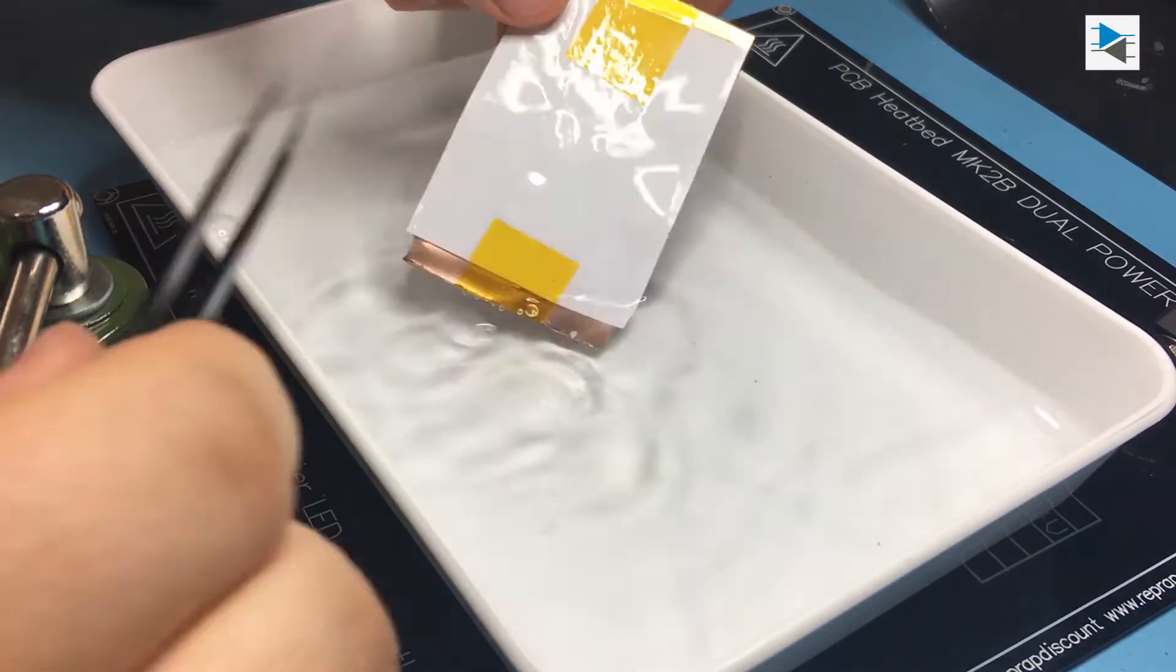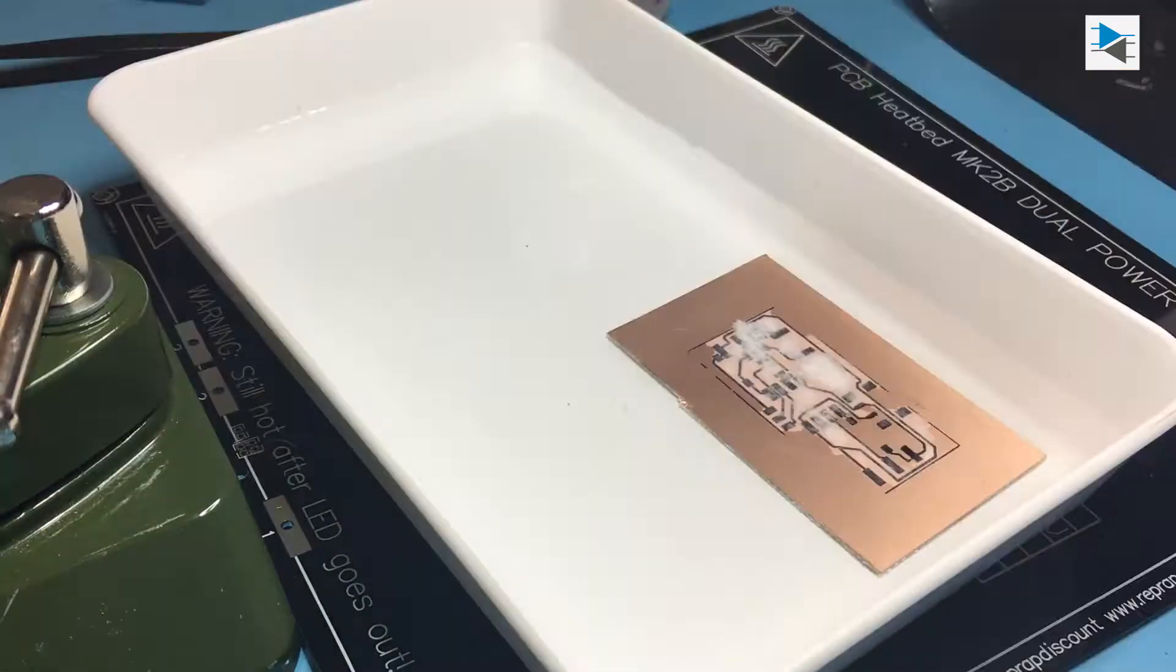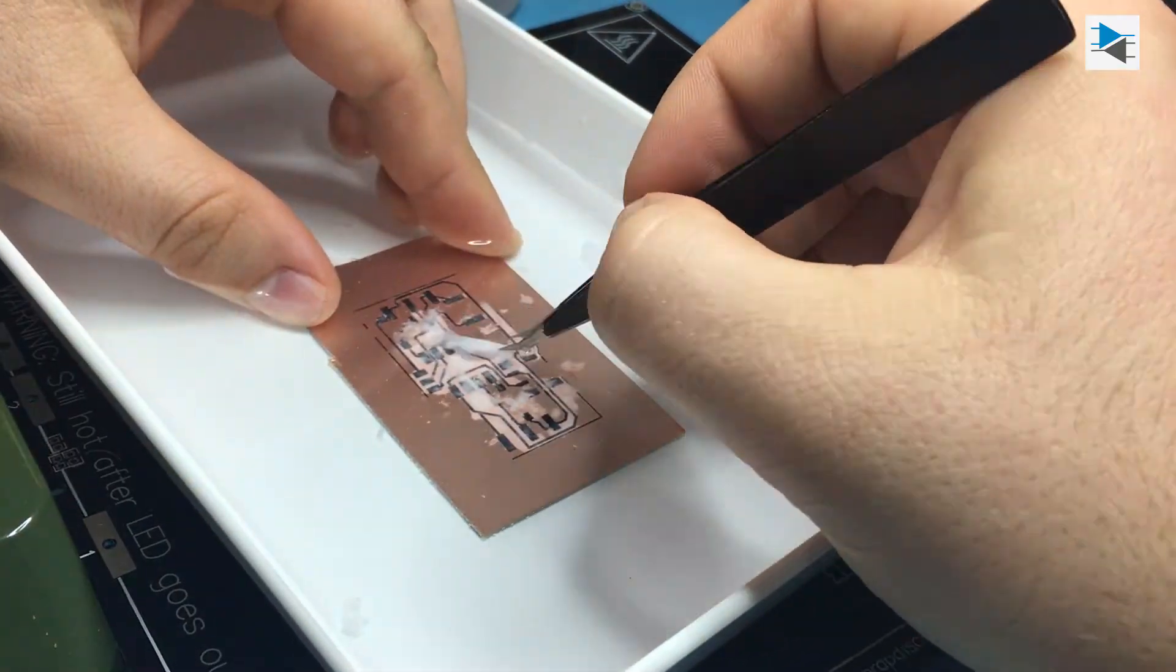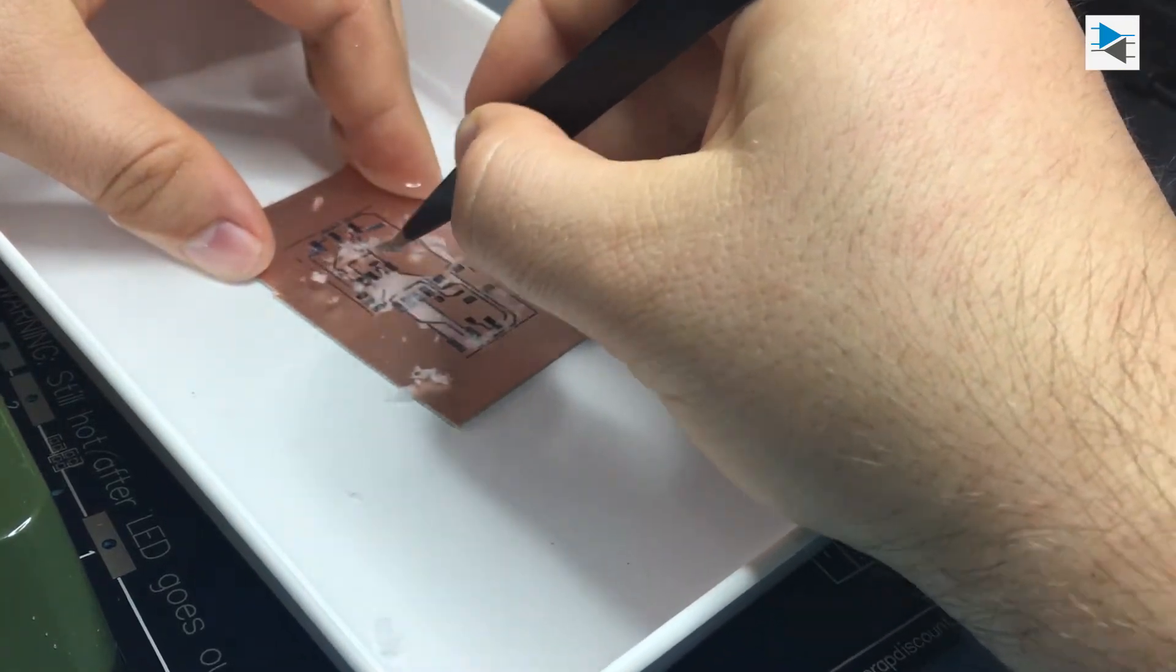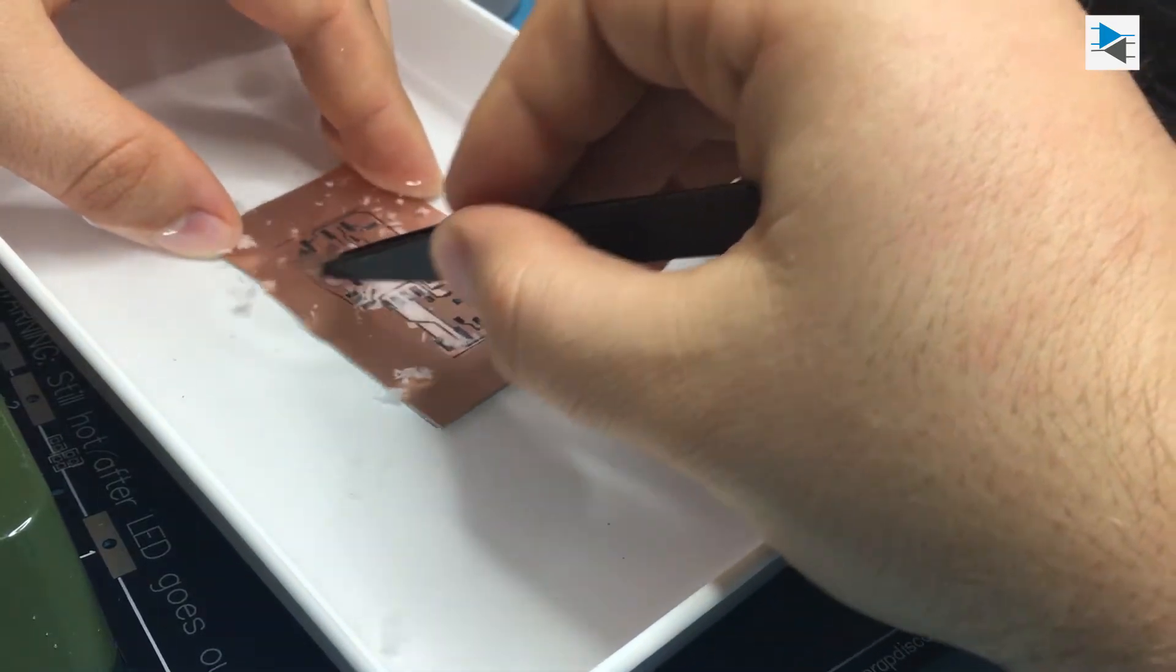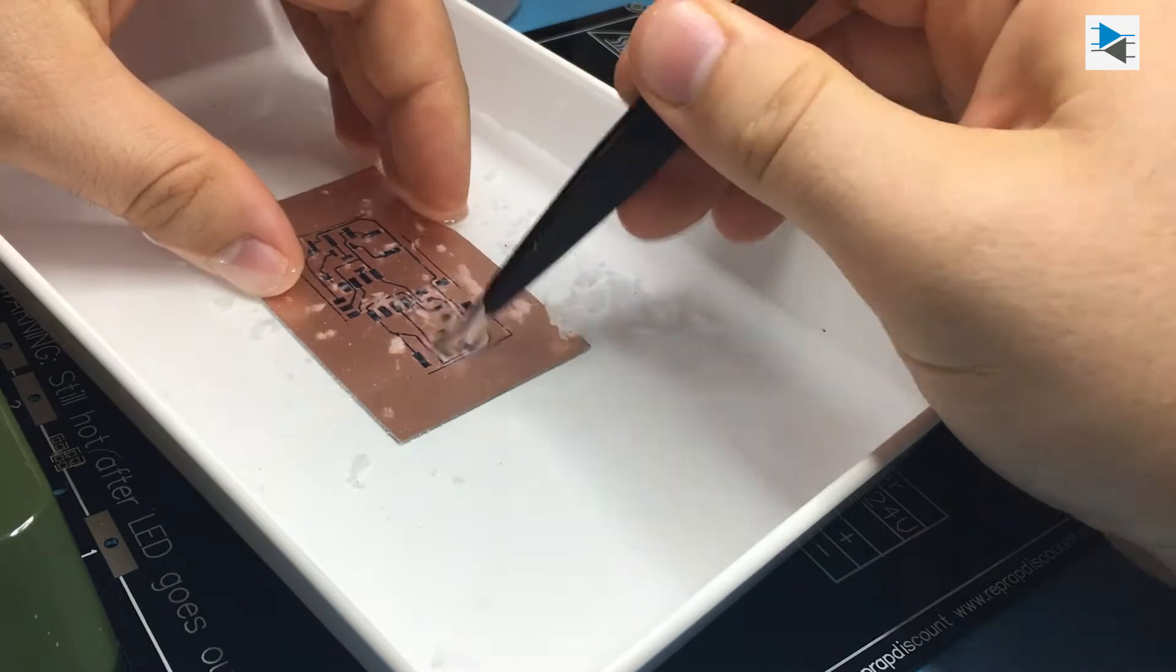After ironing, some cleanup work has to be done to ensure that all of the remaining fibers from the glossy paper are removed from the PCB. It is also critical to ensure that the layout is mirrored before printing as it gets flipped by applying it to the copper board. Failing to do so is a common mistake and it also happened here.